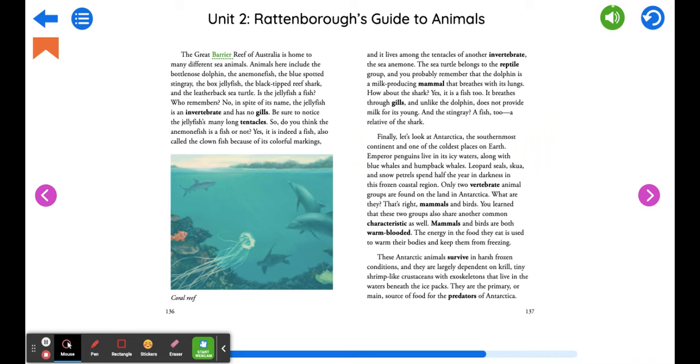The Great Barrier Reef of Australia is home to many different sea animals. Animals here include the bottlenose dolphin, the anemone fish, the blue spotted stingray, the box jellyfish, the black tipped reef shark, and the leatherback sea turtle.